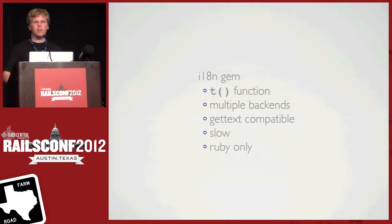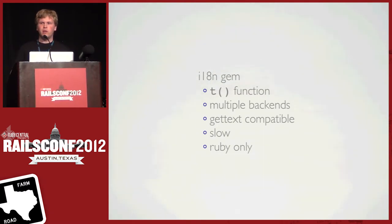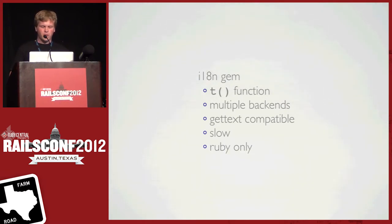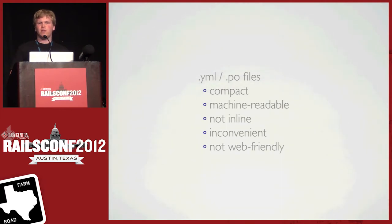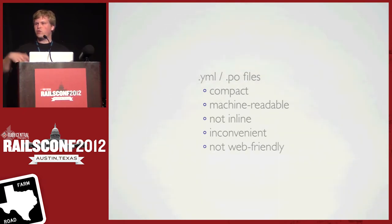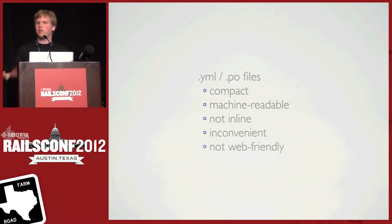The I18N gem provides multiple backends and is gettext-compatible, but it is kind of slow and you can only use it in Ruby. There's no way to use this in JavaScript or any other language. There's also the concept of PO files, which are machine-readable and compact — great, but not inline. You have to externalize all your strings and use dot notation. I personally find them inconvenient and certainly not web-friendly. When was the last time you saw somebody parse YAML in JavaScript? Probably never.